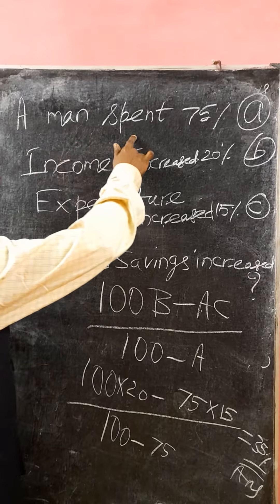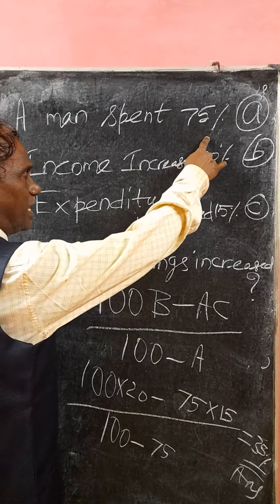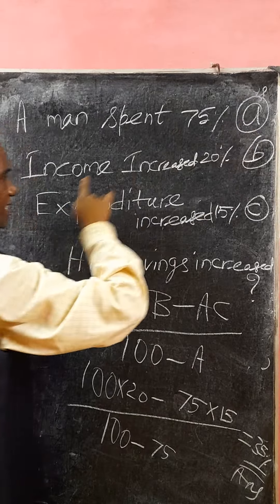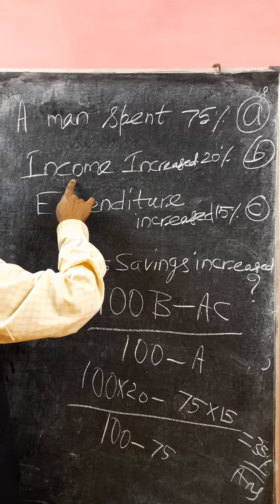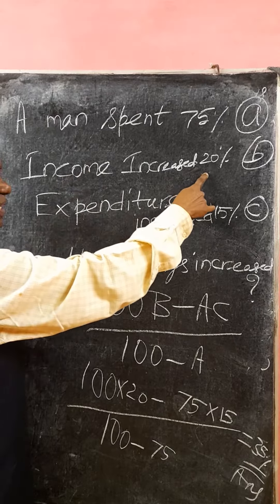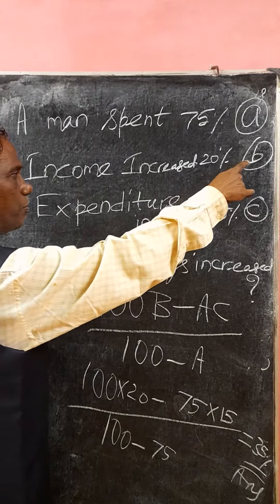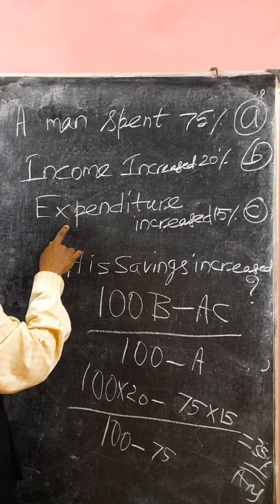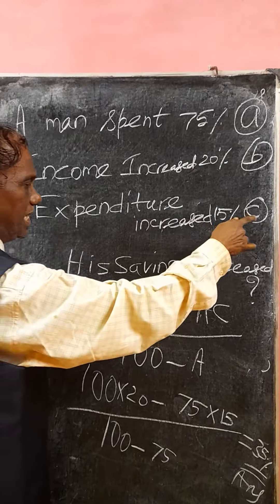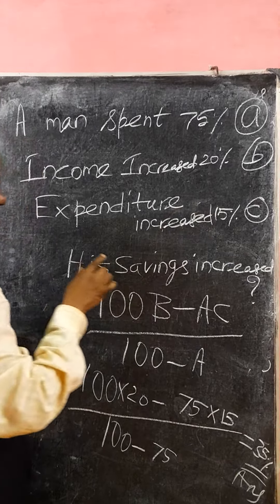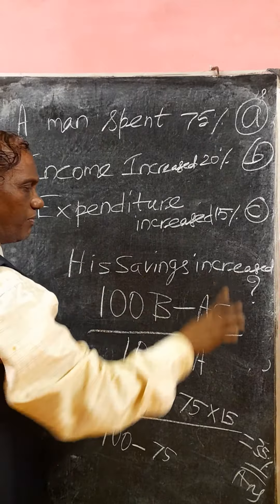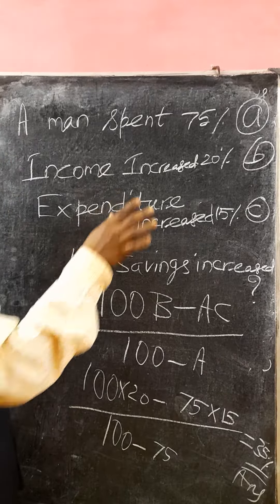A man spends 75% of his income — we mark it as A. His income increases by 20% — we mark it as B. The expenditure increases by 15% — mark it as C. His savings increase by what percent? We have to find the answer.